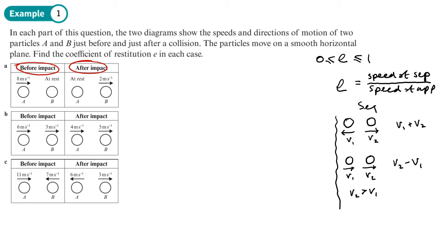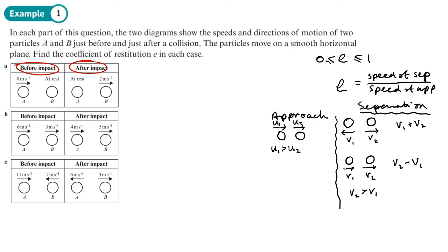For the speed of approach: if things are approaching each other moving in the same direction, then u1 must be greater than u2 — otherwise it would never catch up — and the speed of approach would be u1 minus u2. If they are moving in opposite directions before the collision, then the speed of approach would be u1 plus u2.